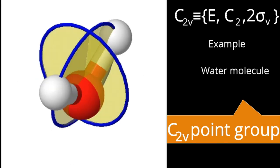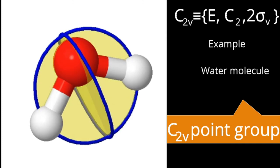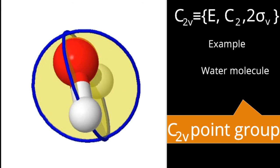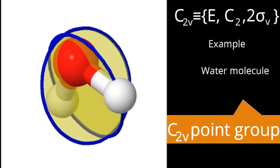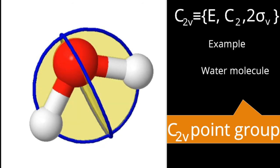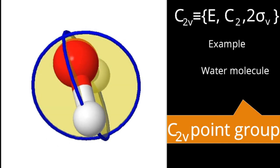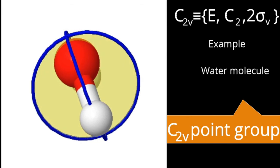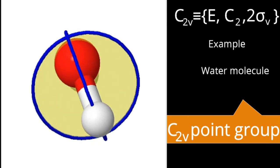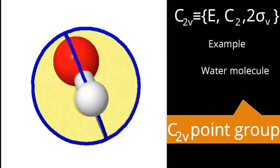Planes are also present in this molecule. How many ways can we cut this molecule into equal halves, and what are the types of those planes? Both planes are vertical because they are passing through the only axis possible — the principal axis. Total operations in the C2V point group: 4 — Identity, C2, and 2 sigma V.